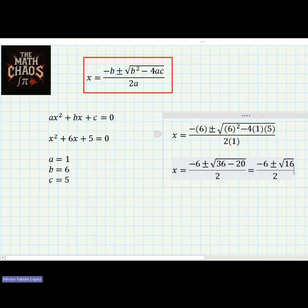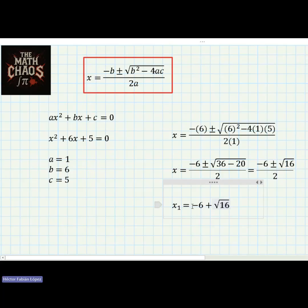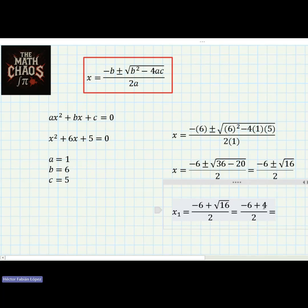As you can see, the plus or minus implies two results. For the first result, we use the plus sign: x₁ equals negative six plus the square root of 16, all over two. The square root of 16 is four, so we have negative six plus four, which equals negative two. Negative two over two equals negative one.